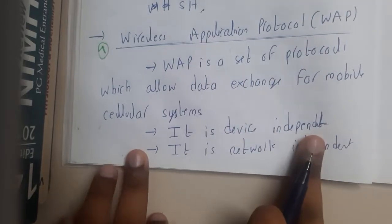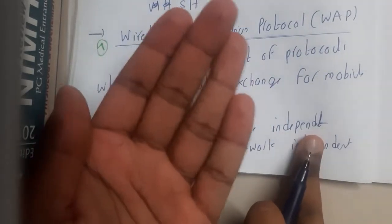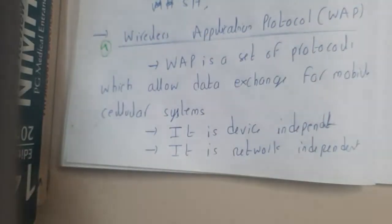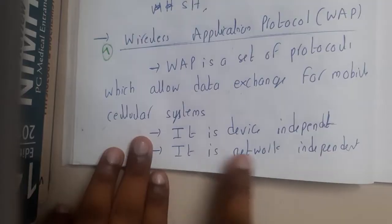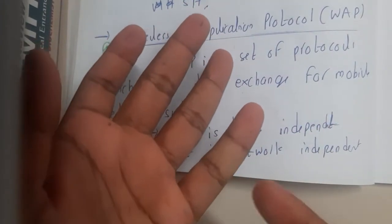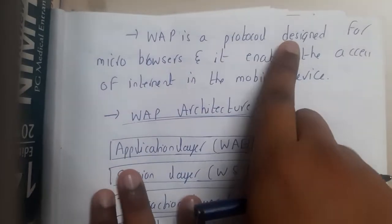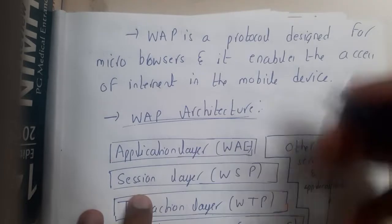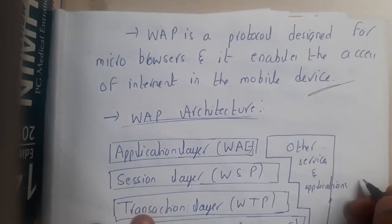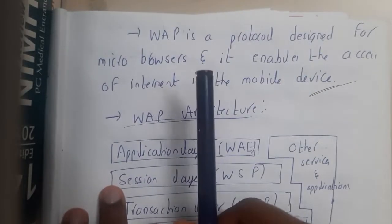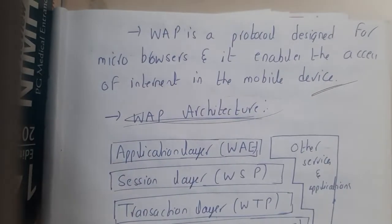WAP is device independent, so basically you can watch a website on your mobile, on your smartphone, on your iPhone, or any kind of device — it is 100% supported. It is also network independent, so you can connect it to Wi-Fi, BSNL, Airtel, Jio, or any network and it will work fine. WAP is a protocol designed for micro browsers and it enables access to the internet on mobile devices.